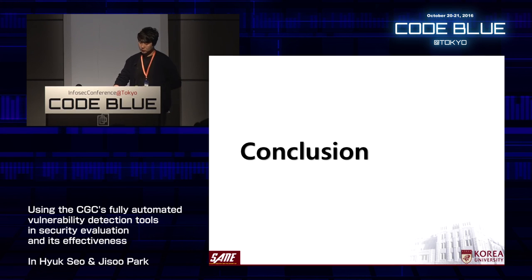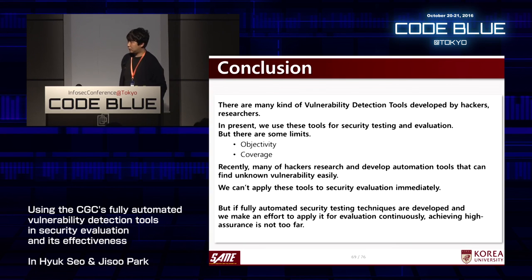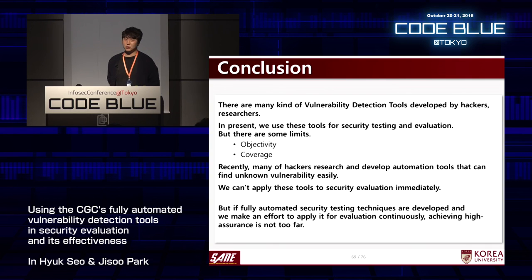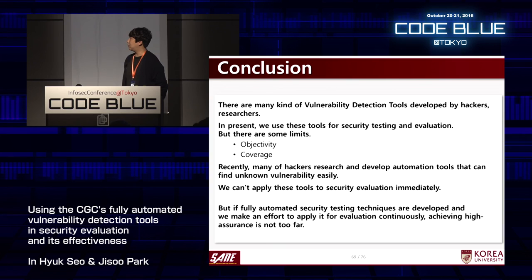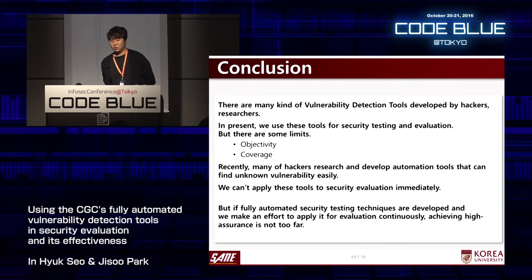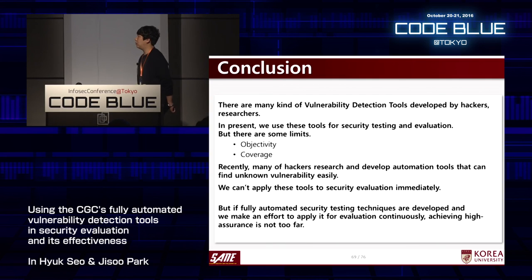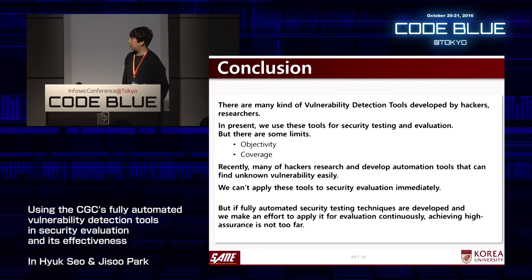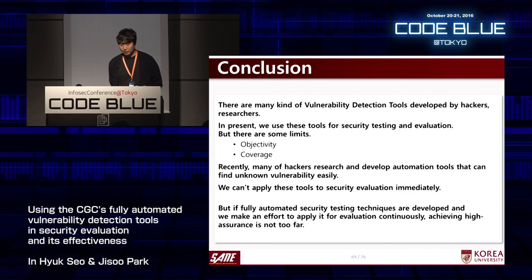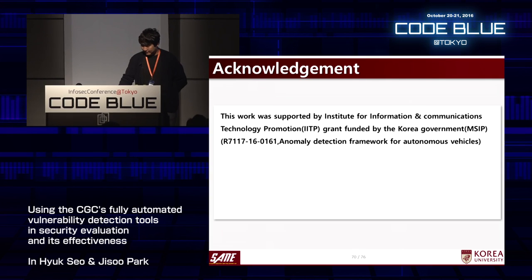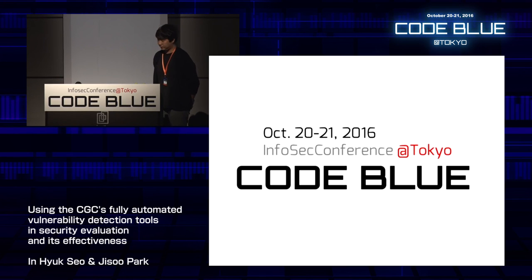In conclusion, there are many kinds of vulnerability detection tools developed by hackers and researchers, and we currently use these tools for security testing and evaluation, but there are limitations: objectivity, coverage, efficiency, and usability. Recently, many hackers research and develop automation tools that can find unknown vulnerabilities more easily. We can't apply these tools to security evaluation immediately, but if fully automated security testing techniques are developed and we make an effort to apply them to evaluation continuously, achieving high assurance is not far. Thank you.